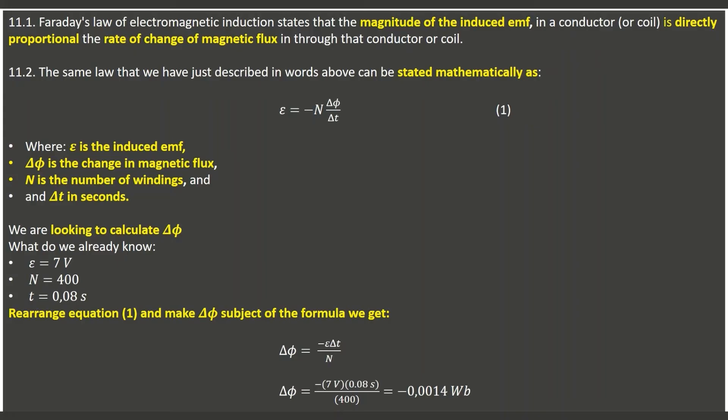We want to calculate the change in magnetic flux. We know the induced EMF equals 7 volts, N equals 400, and the time of rotation was 0.08 seconds. We rearrange Equation 1 to make the change in magnetic flux the subject of the formula. Substituting all known values, we find the change in magnetic flux is negative 0.0014 weber (Wb), which is the unit of measurement for magnetic flux.